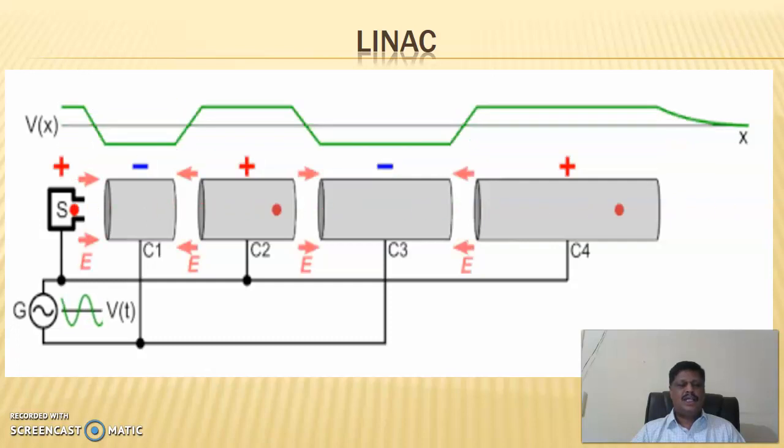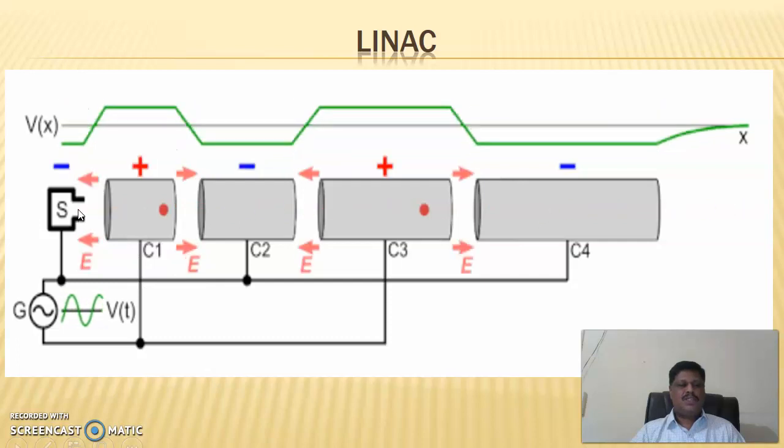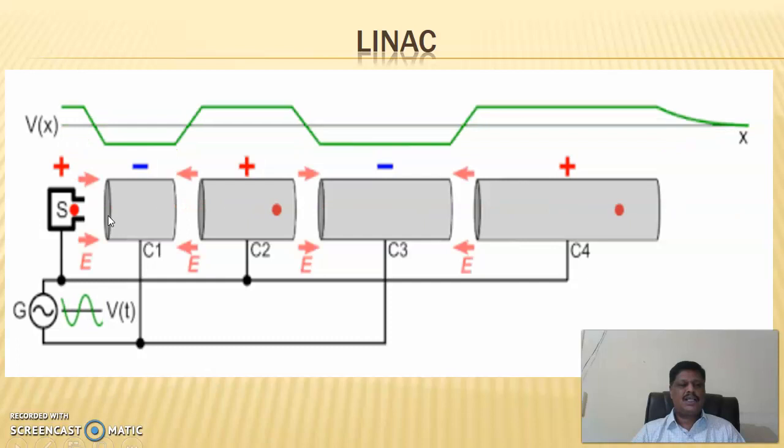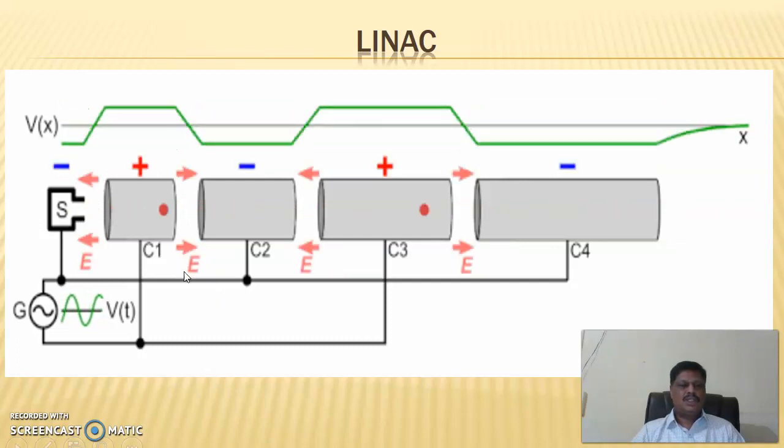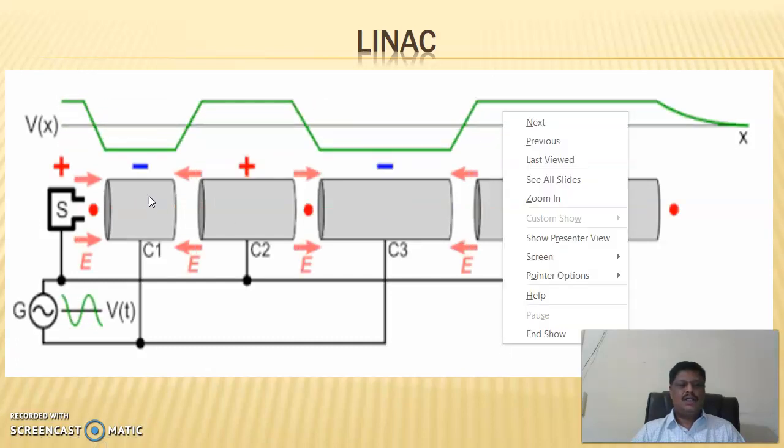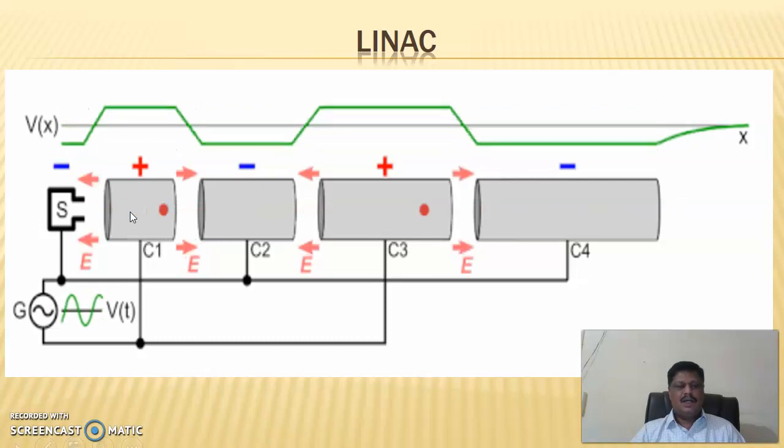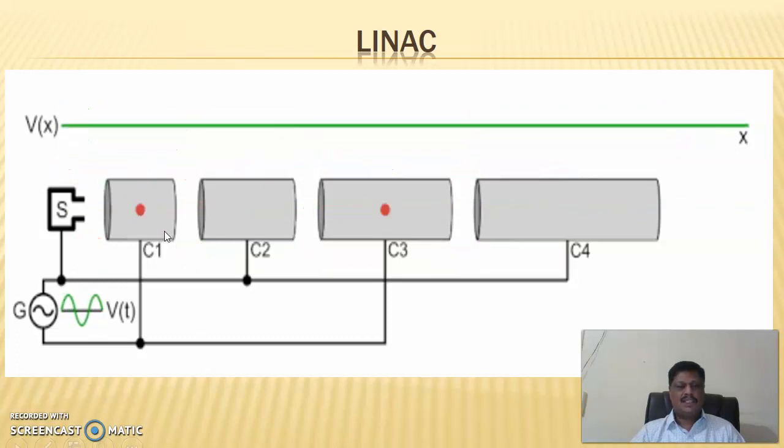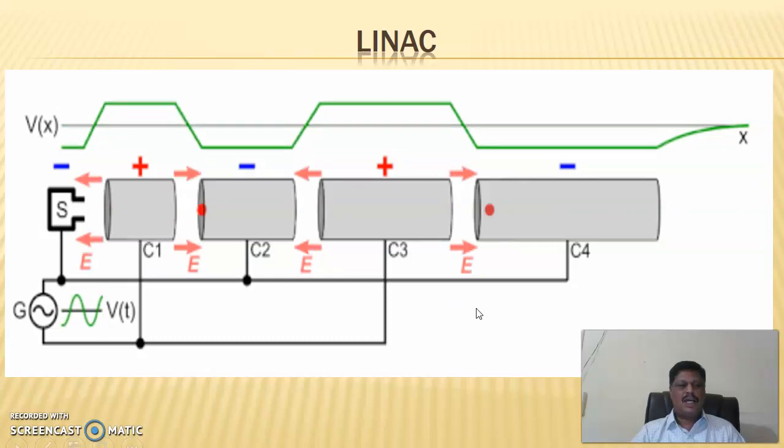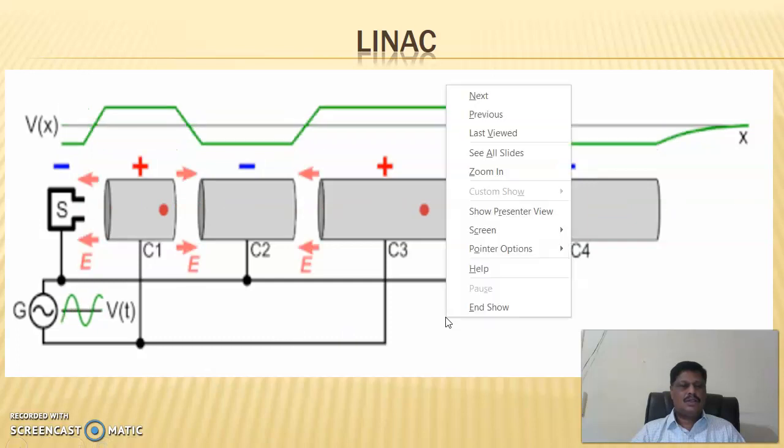The animation picture shows how the particle gets accelerated and how the polarity of the high frequency AC source changes when it enters the gap. In the beginning, the positively charged proton emitted by the source is attracted by the negative terminal of the source. Cylinder 1, 3 are at negative potential and cylinder 2, 4, 6 are at positive potential. This negative potential accelerates the positively charged proton. During the time of travel inside the cylinder, the particle moves with a constant velocity. When this proton comes here, again, cylinders 2, 4, 6 are at negative potential.